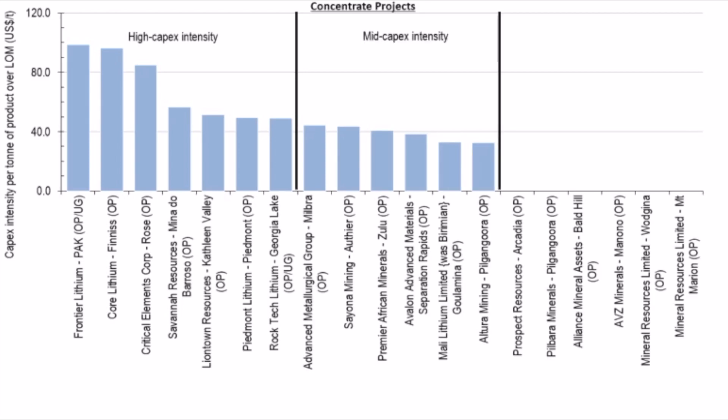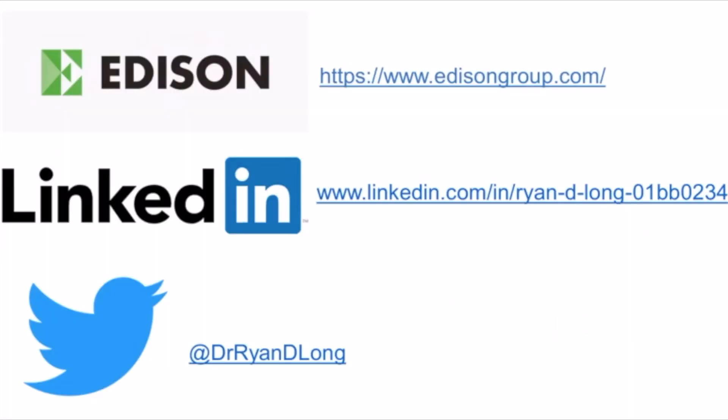Mid capex intensity projects vary from 44.4 US dollars per tonne to 32.4 US dollars per tonne, while low capex projects vary from 31.7 US dollars per tonne to 5.8 US dollars per tonne.